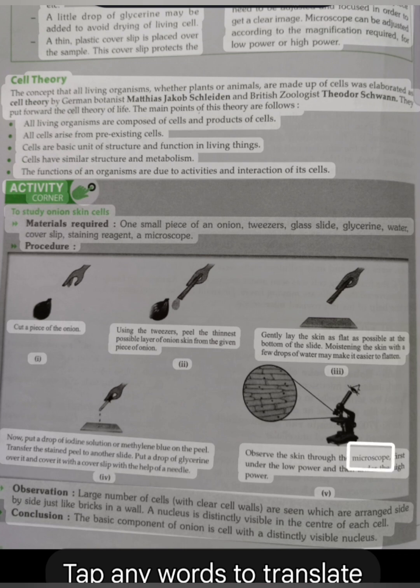IV. Observe the skin through the microscope, first under the low power and then under the high power. Observation: Large number of cells with clear cell walls are seen which are arranged side by side just like bricks in a wall. A nucleus is distinctly visible in the center of each cell. Conclusion: The basic component of onion is cell with a distinctly visible nucleus.